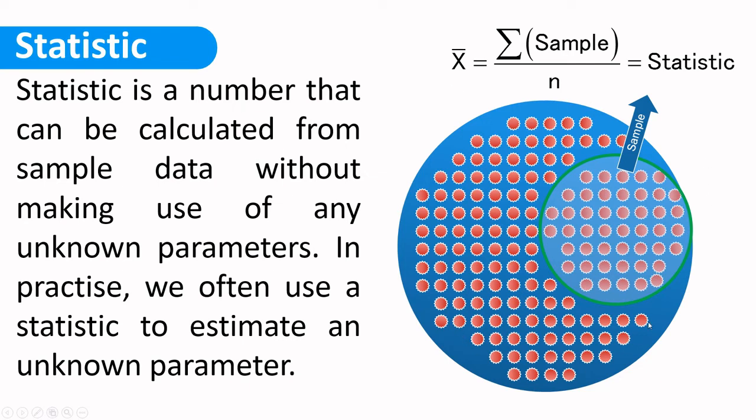If we deal with the entire population and we got its mean or variance from entire population, so, the value of mean, variance, standard deviation, any value we obtain, this is called parameter. And the value computed from sample is called statistic.